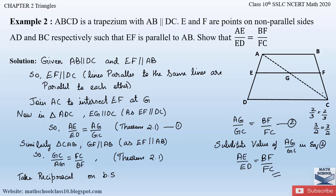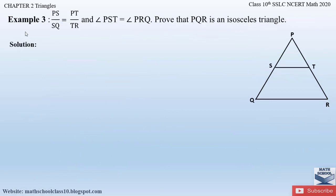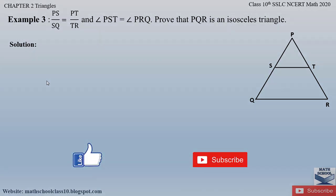It is very simple: if a trapezium is given, just draw a diagonal to cut the trapezium into two triangles, then apply Theorem 2.1 to prove the given equation. If you have any doubt, please comment below. In my next video I'll be solving Example 3 from Chapter 2 Triangles. Please like my video and subscribe to my channel. Thank you.